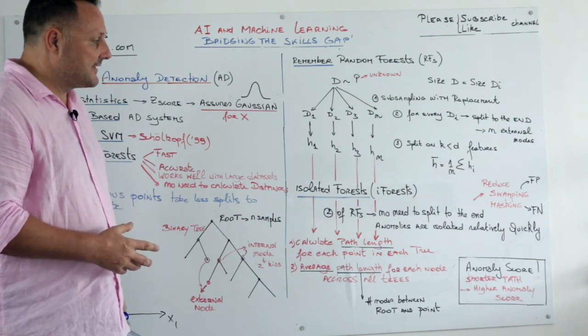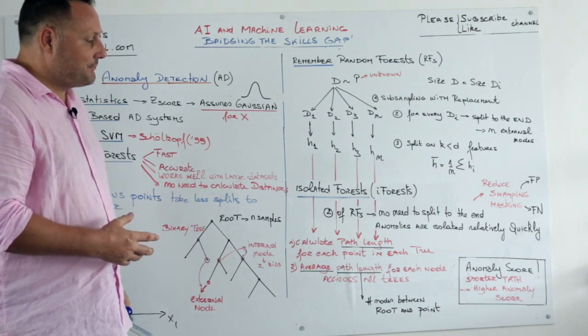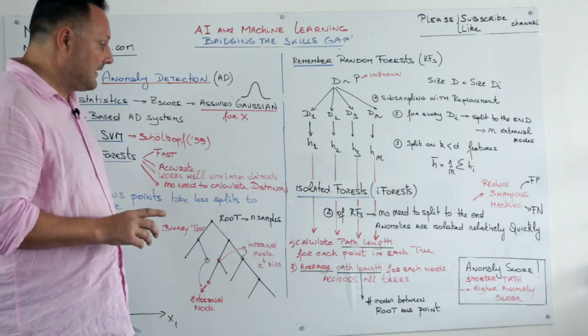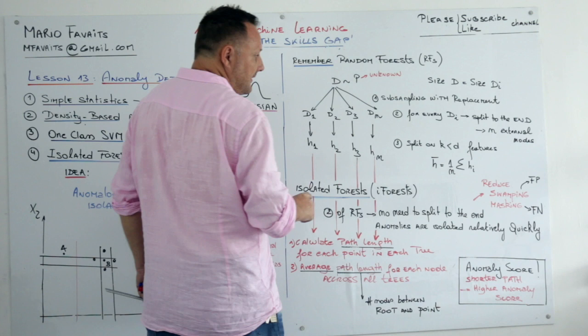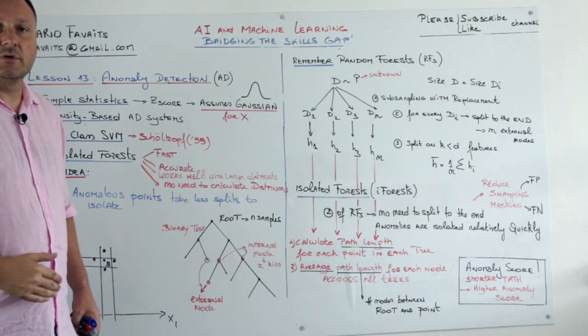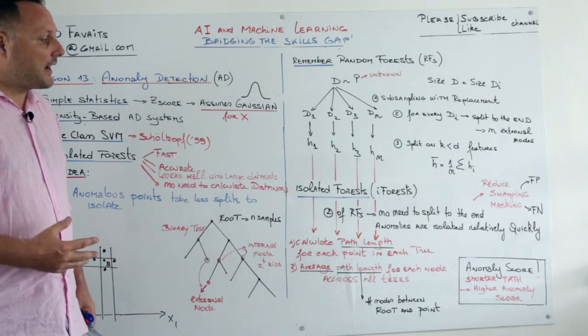Now isolated forests, iForest, basically work the same way. There are some little tweaks. The first tweak is that you're not going to the end. You're not splitting all the way down. And why is that?